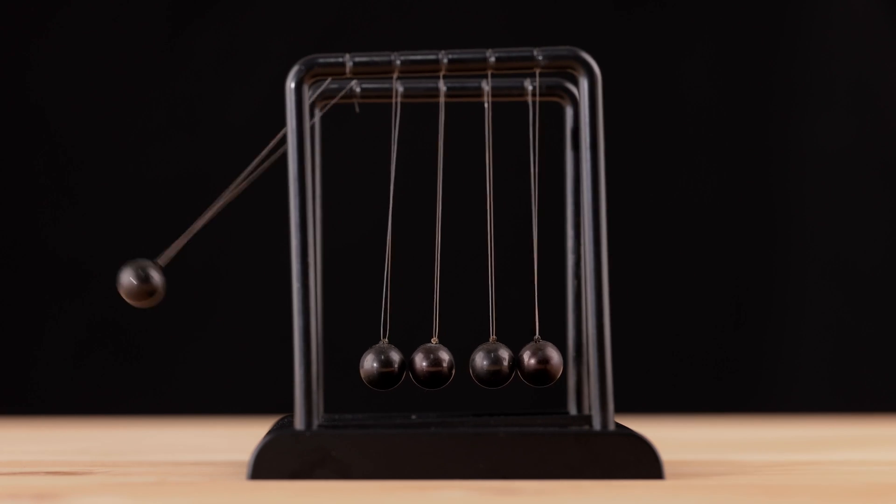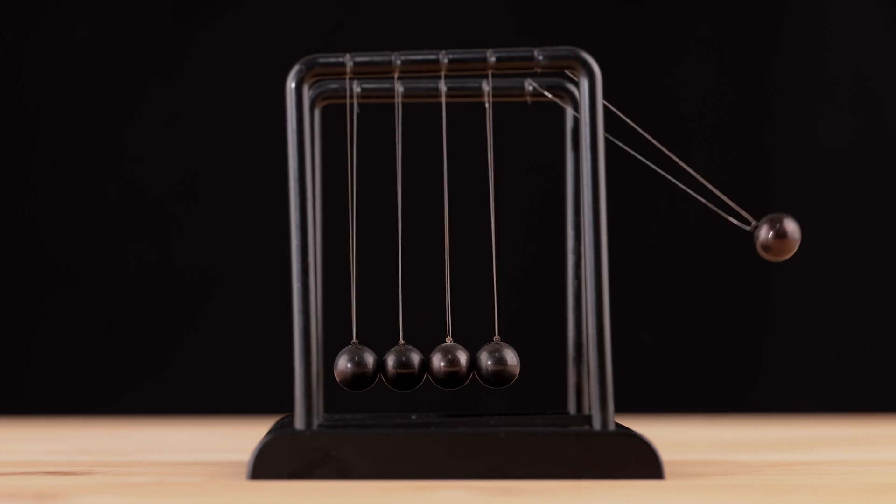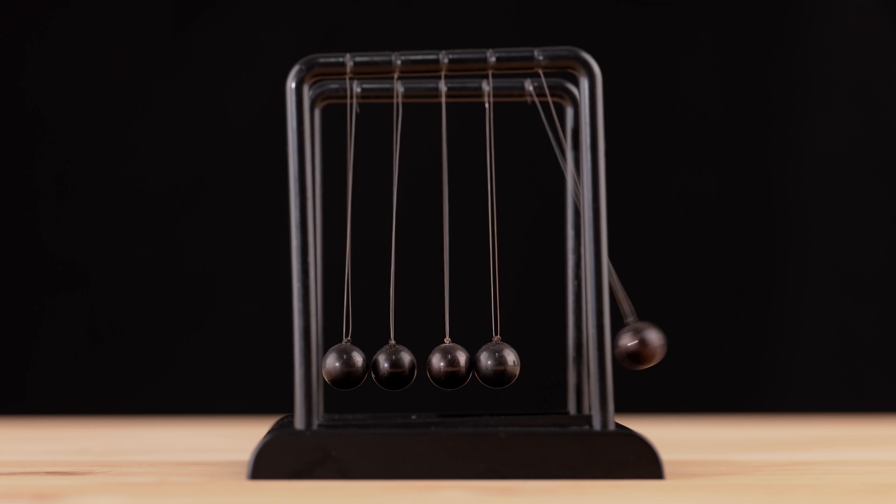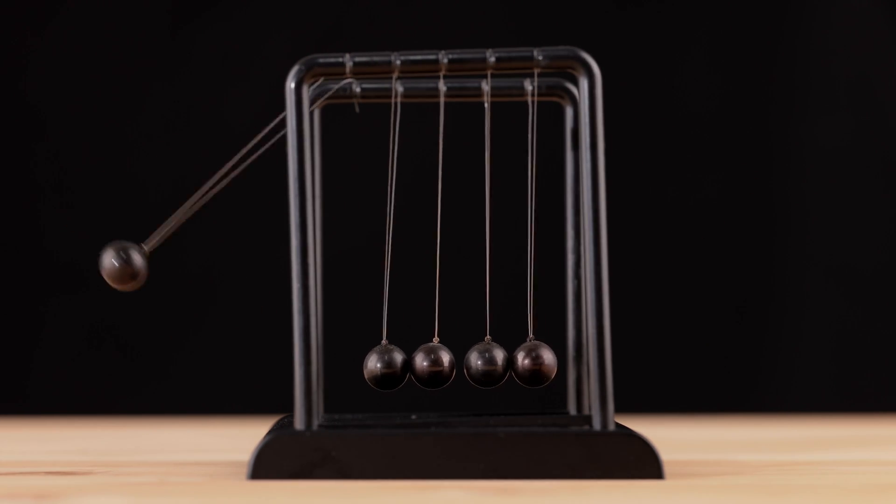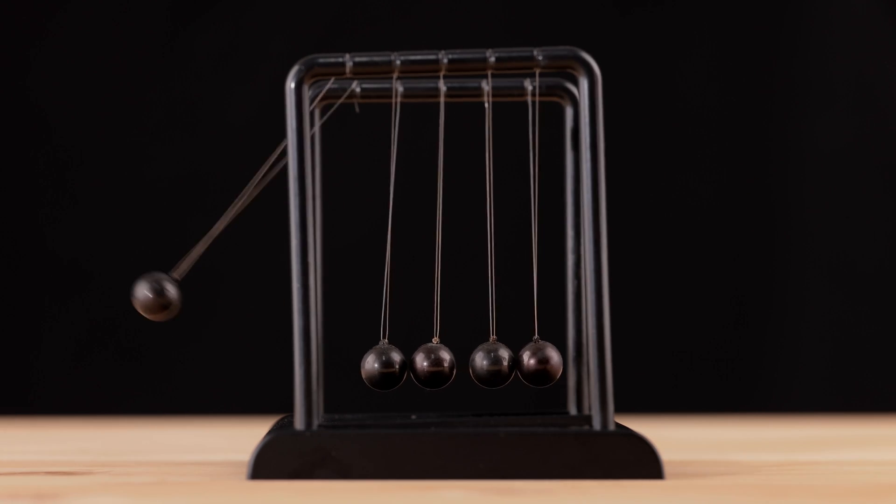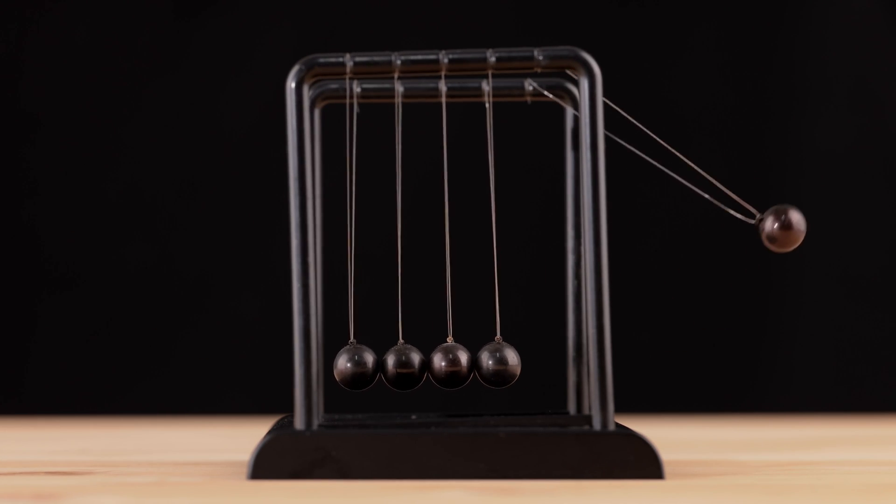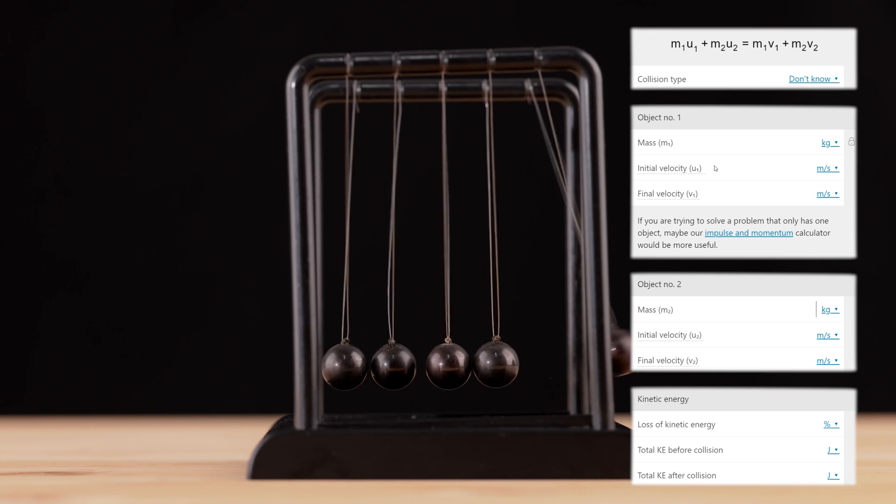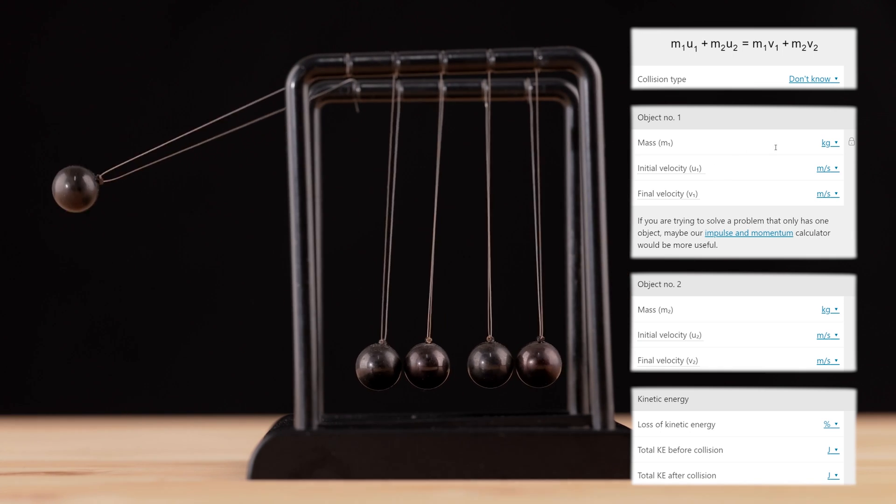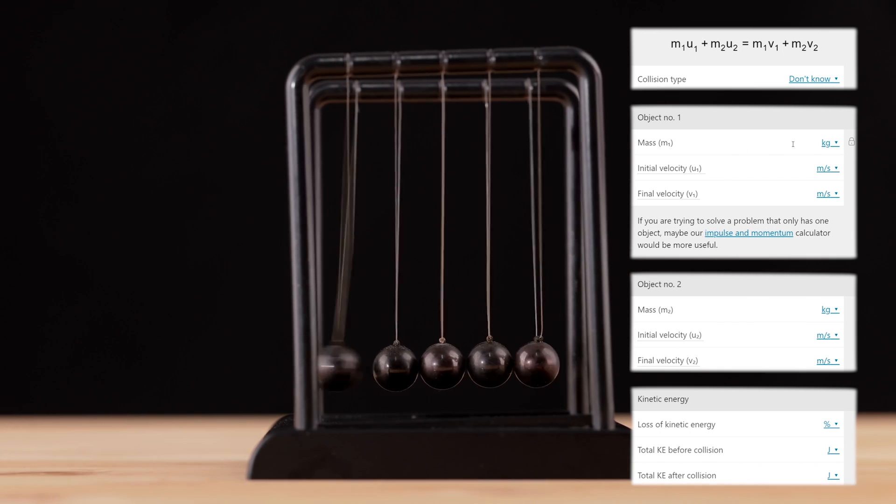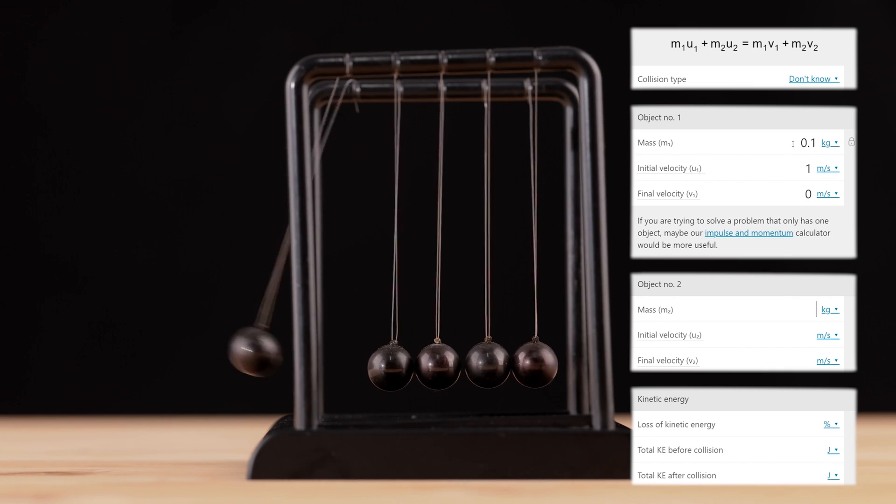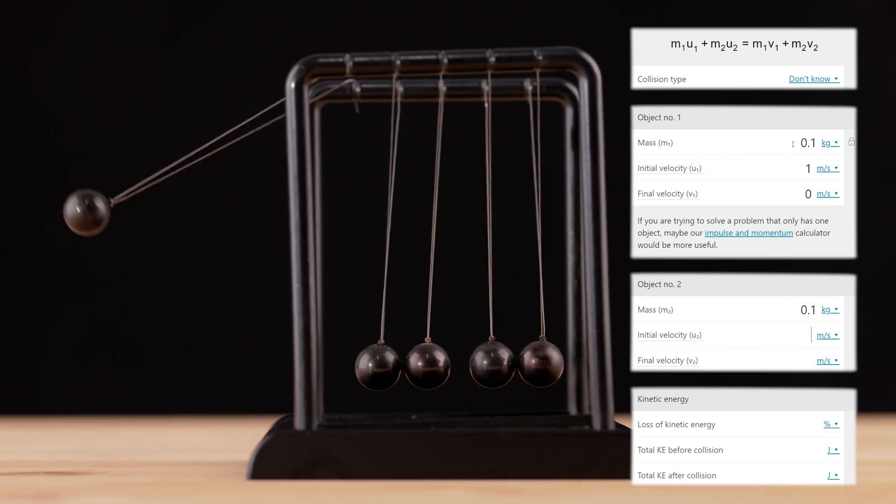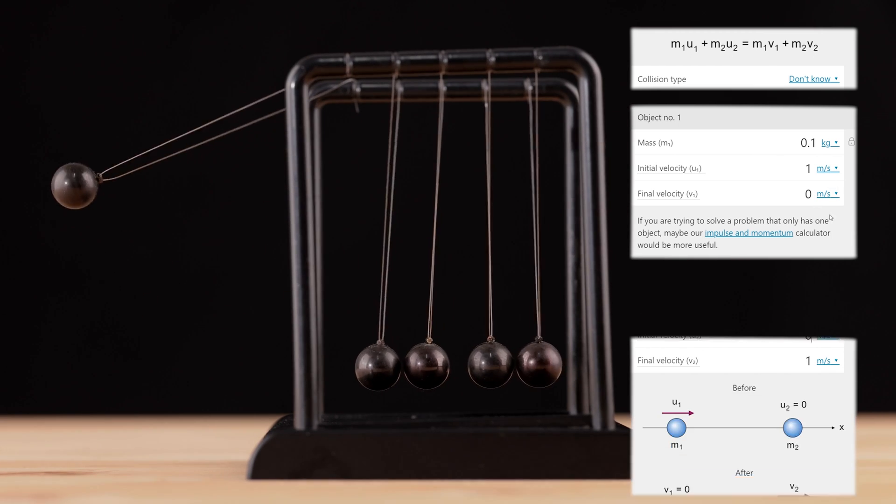As you can see, in the Newton's Cradle, all the things about the balls are the same. Even the speed at which they move to the left or to the right is the same. We can use a free online calculator, like the one I linked in the video description, to understand if energy and momentum are conserved in this situation. The actual numbers don't matter that much, but they have to be the same. Let's say the balls are 100 grams each and they're moving at one meter per second.